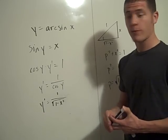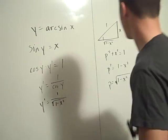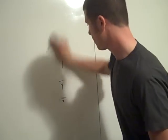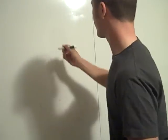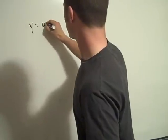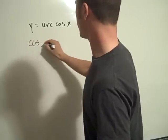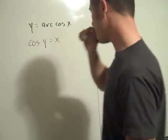So we can do the same thing for y equals arc cosine x. Let's do that. So if I have y equals arc cosine x, this is the same as saying cosine y equals x.